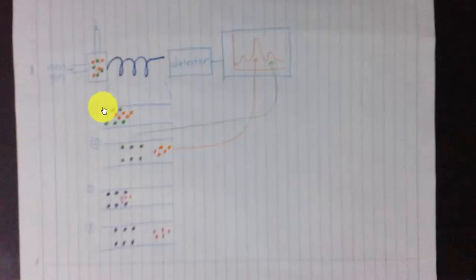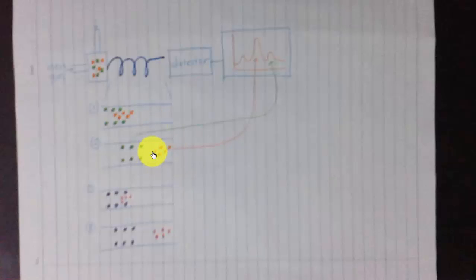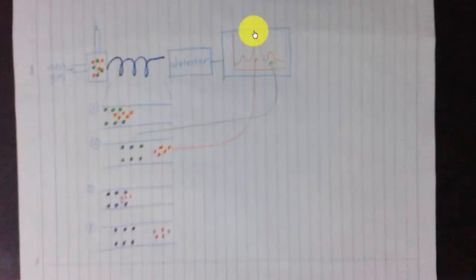I would like to explain what happens in the column during the process. In the column, there are two compounds: the green compound and the orange compound. In the first phase, the orange and green compounds travel closely together. During the second phase, the green compound is left behind while the orange compound moves ahead. When the orange compound passes through the detector, the graph shows the first peak, and the second peak appears after the green compound passes through the detector.